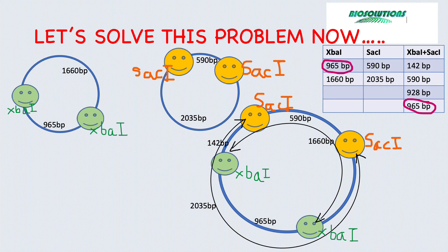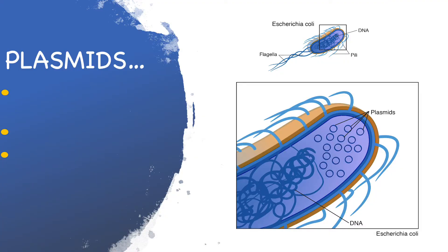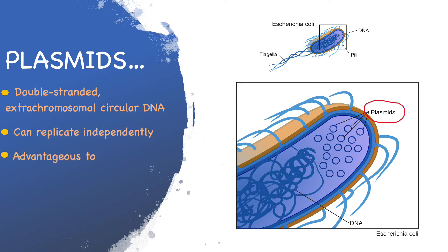Restriction mapping of circular DNA is important as it is performed to create restriction maps of plasmids. Plasmids are small circular double-stranded DNA molecules found naturally in many bacteria. Their size can vary from 0.1% to 5% of that of bacterial DNA — roughly around 1,000 base pairs to a few thousand base pairs. Plasmids carry a few genes which can be advantageous to bacteria, like genes for antibiotic resistance or bacterial conjugation. Plasmids can replicate independently of chromosomal replication, hence can produce multiple copies — a very useful feature for cloning.